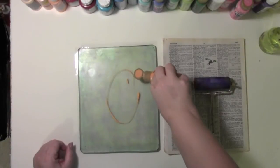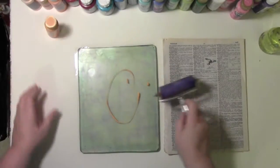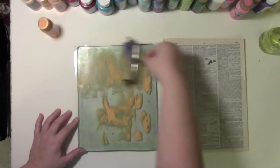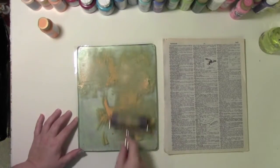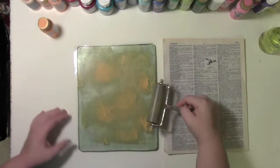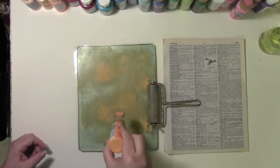Squirt the paint directly onto the jelly plate. How much paint you use changes the look of the print. Spread the paint around with your brayer, and experiment with using a little or a lot of paint. I'm thinking I want a bit more paint for this.